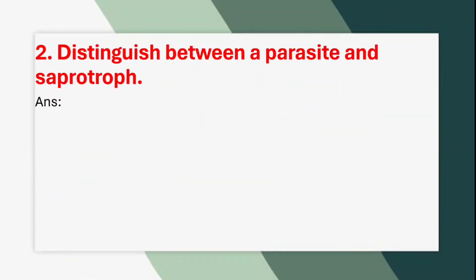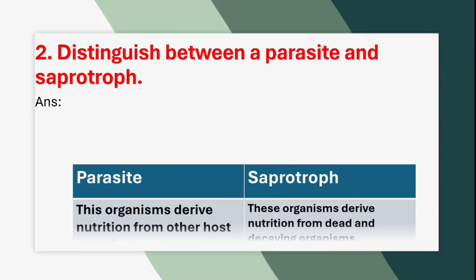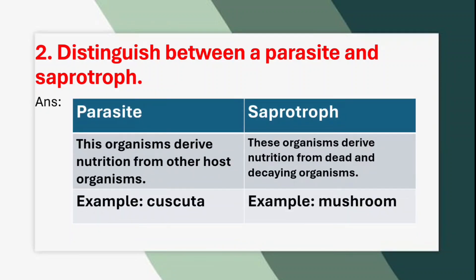Second question: Distinguish between a parasite and a saprotroph. Answer — Parasite: These organisms derive nutrition from other host organisms. Example: Cuscuta. Saprotroph: These organisms derive nutrition from dead and decaying organisms. Example: Mushroom.